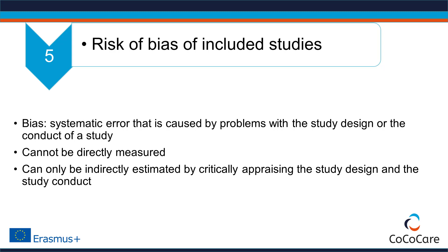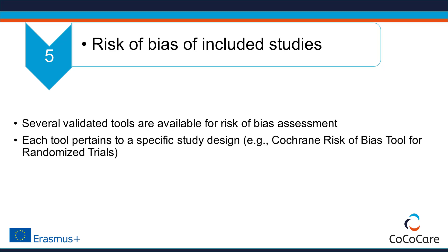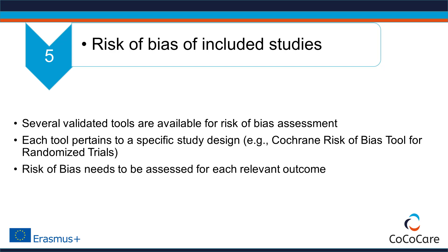A study that was well designed and well conducted will have a low risk of bias. Several validated tools exist that can help reviewers assess the risk of bias in a standardized manner. Each of these tools pertains to a specific study design — for example, the Cochrane risk of bias tool is specific for randomized controlled trials and cannot be used for observational studies. Importantly, risk of bias needs to be assessed for each relevant outcome, because a study with low risk of bias for one outcome could have a high risk of bias for another.